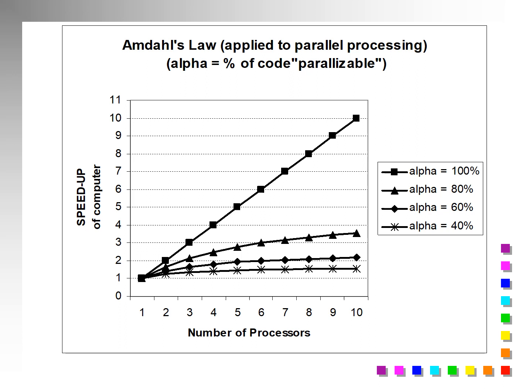If you have a problem, you're starting up the computer and then you parse the problem and put it on the different processors or different cores — you're going to have to communicate the answers back and share data between the different cores at different times. So you're never going to get this 100% speed up, and that's the whole point of this exercise.